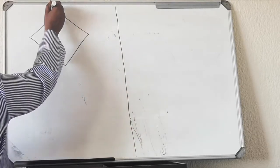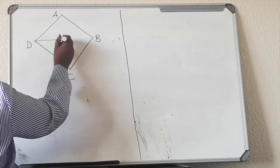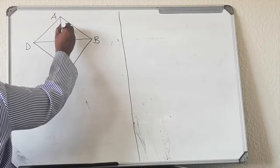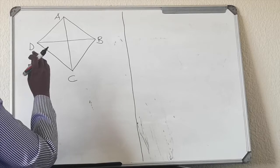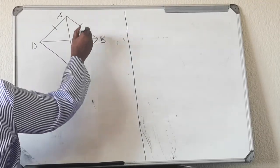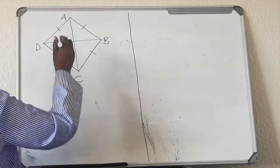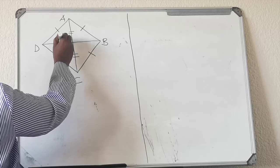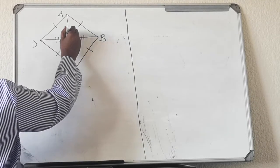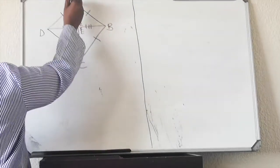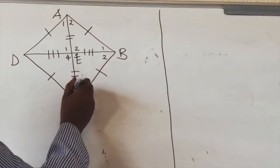We're going to draw a rhombus where all sides are equal, and call it ABCD. We're also going to draw the diagonals — diagonal DB and diagonal AC. After drawing the rhombus, we note that all sides are equal. The diagonals of the rhombus bisect each other, so the halves are equal. We call the center point E. It has four angles: angle 1, angle 2, angle 3, and angle 4. Angle A has two angles: A1 and A2; similarly B1, B2, C1, C2, and D1, D2.